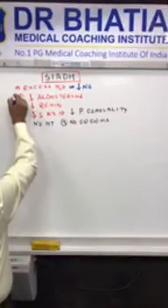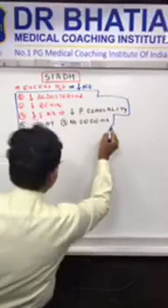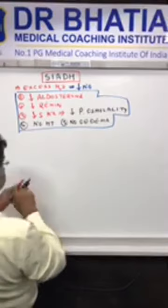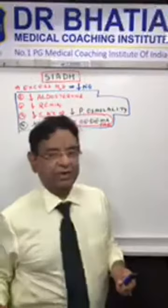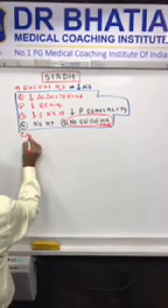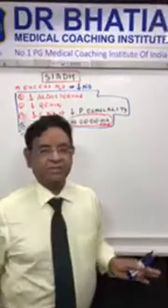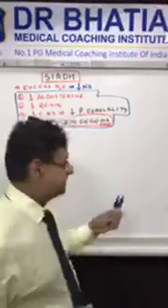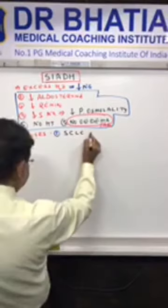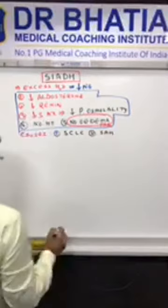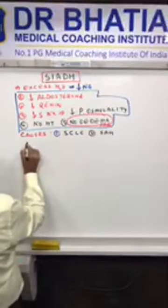This is very important from an exam point of view and is the most frequently asked question. The most important causes of SIADH you must not forget are: number one, small cell lung cancer; number two, subarachnoid hemorrhage; and meningitis.